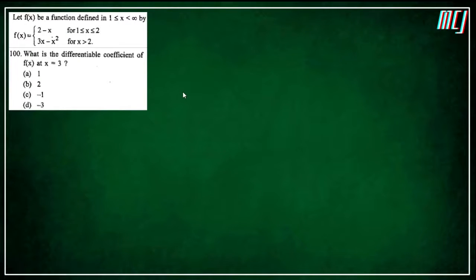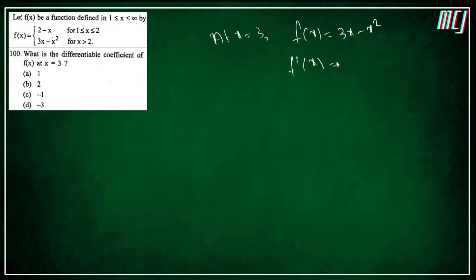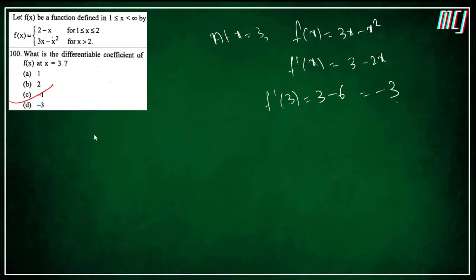For the passage, find differential coefficient at x=3. For x>2, f(x) = 3x−x². f'(x) = 3−2x. At x=3: f'(3) = 3−6 = −3. Answer is −3.